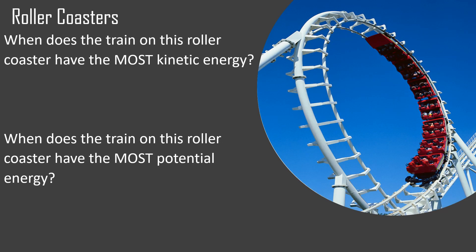Now let's look at a loop. When does the train on this roller coaster have the most kinetic energy? You can easily point out two points: right before it begins to slow down going into the loop, and whenever it's coming out of the loop. It has the most kinetic energy there — it's at its highest speed. When does it have the most potential energy? Right at the top of the loop, when it's slowed down to its maximum, right before it falls back down on the rails.